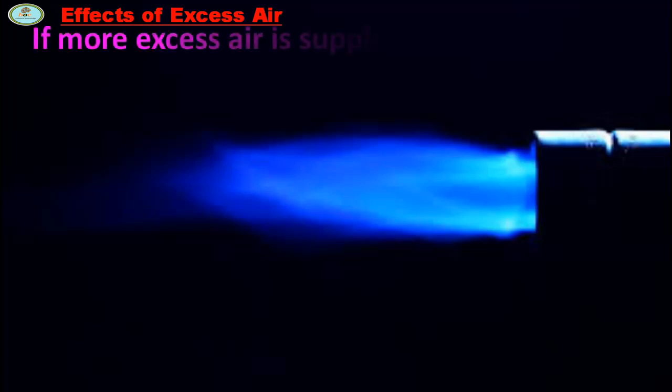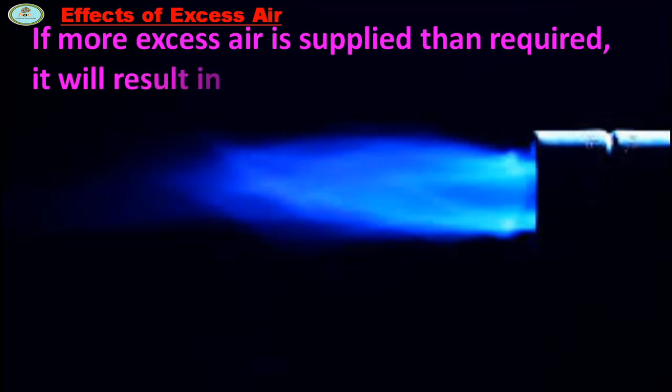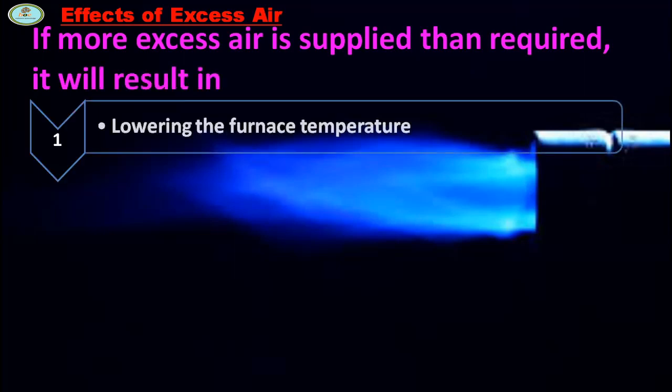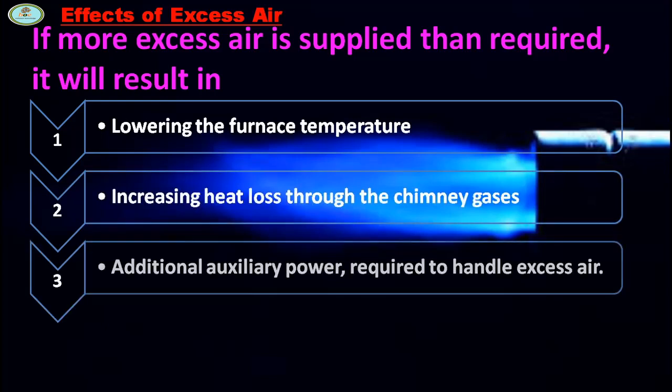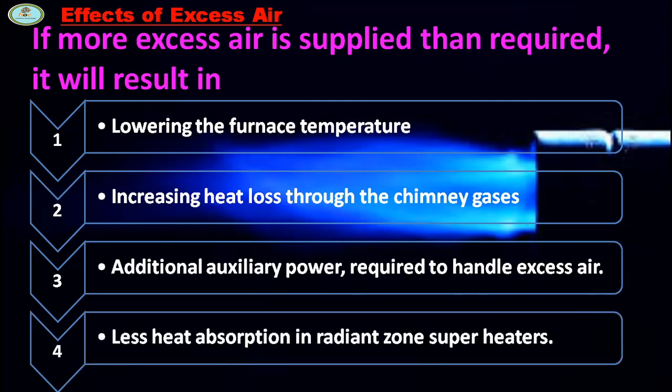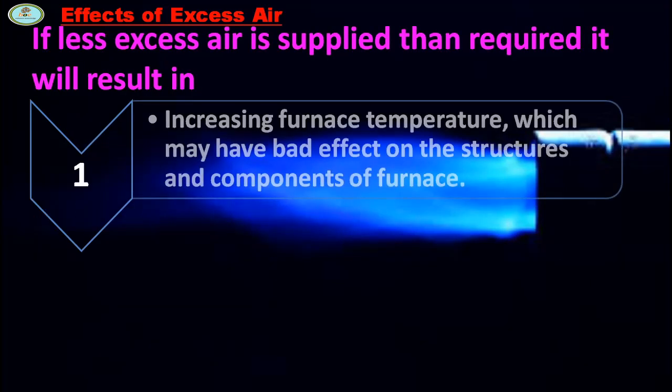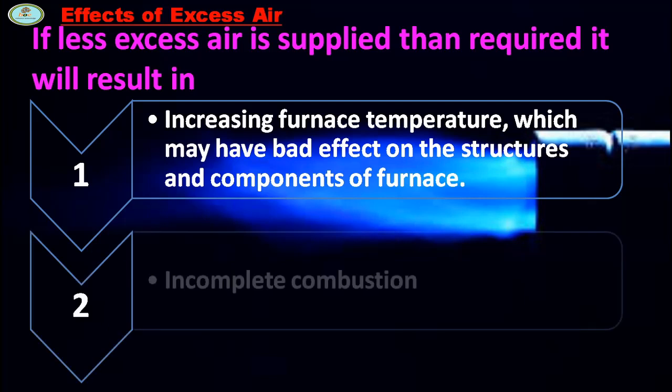Effect of excess air: If more excess air is supplied than required, it will result in lowering the furnace temperature, increasing heat loss through the chimney gas, additional auxiliary power required to handle excess air, less heat absorption in radiant zone, superheaters increasing furnace temperature, which have bad effect on the structure and components of furnace in complete combustion.